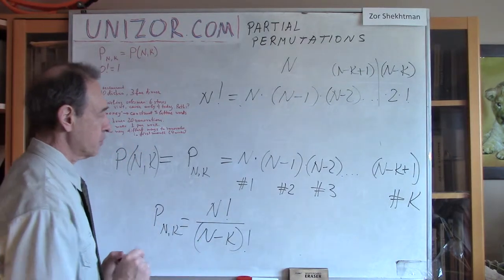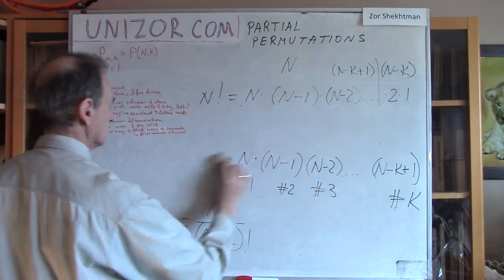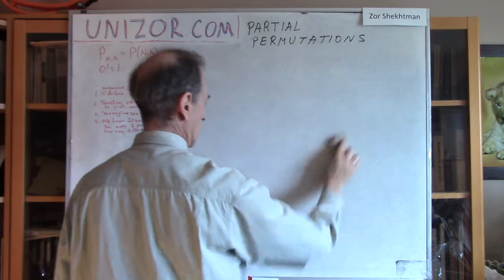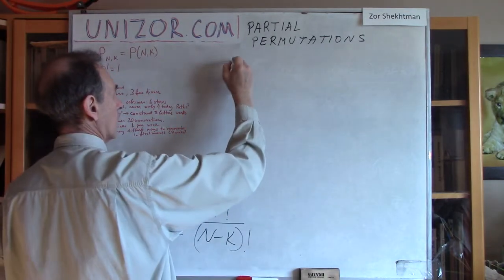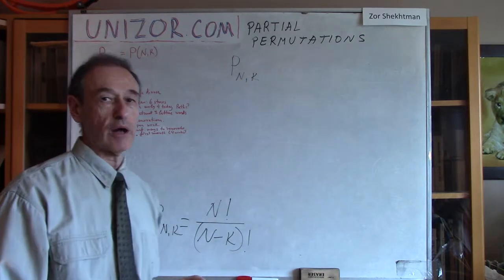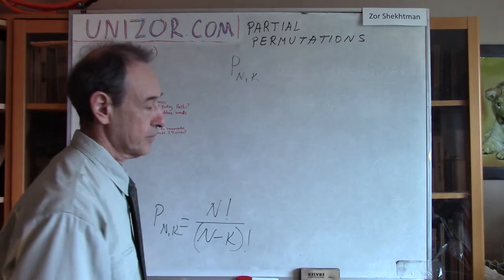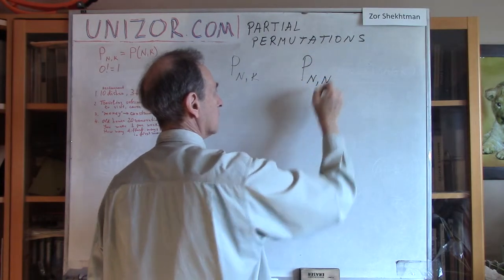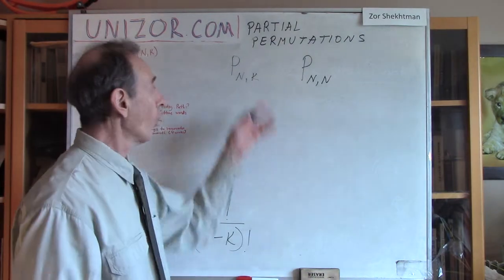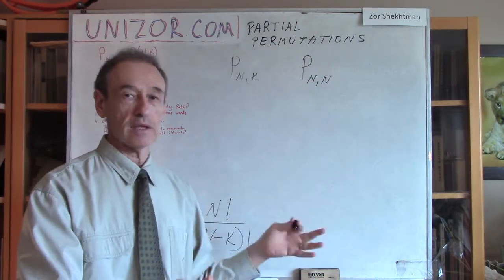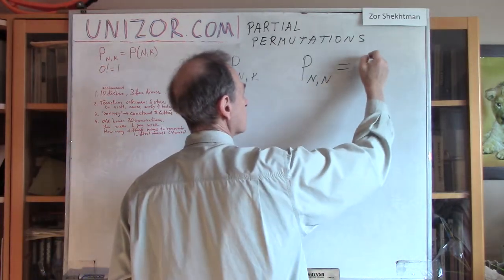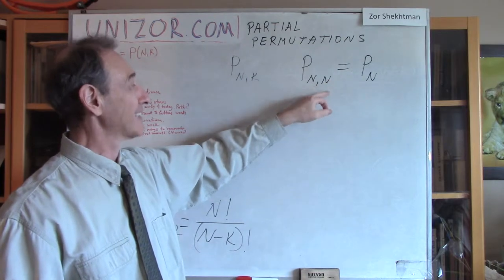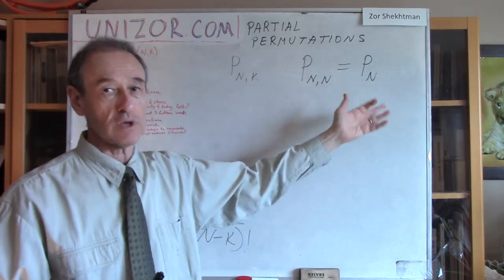Here we have a little twist I wanted to talk about. We are talking about partial permutations of k objects out of n. Now, if we are talking about partial permutations of n objects out of n, well, that's actually the regular permutation — all the different regular permutations the set of n objects can have. So this is supposed to be equal to our original formula: partial permutations of n out of n is exactly the same as the regular permutation of n objects.